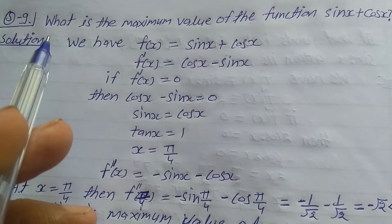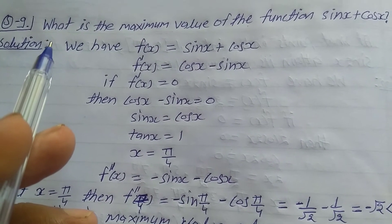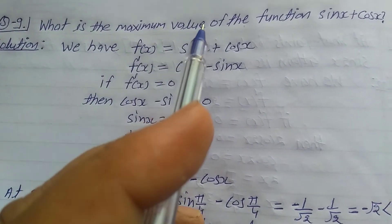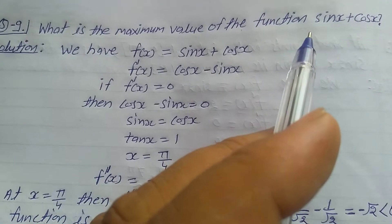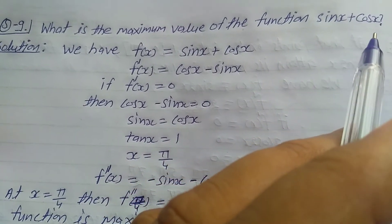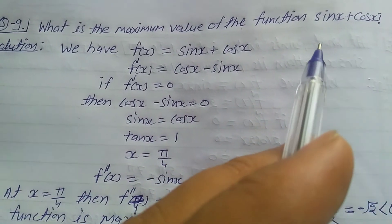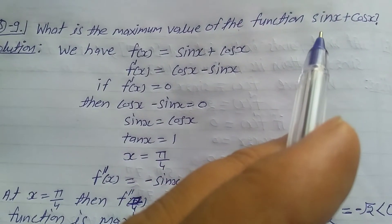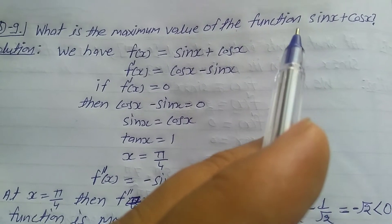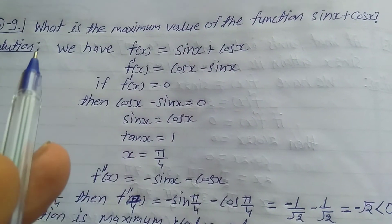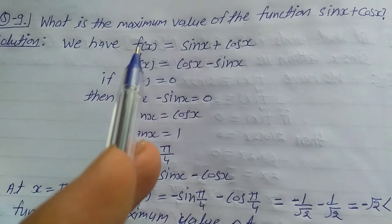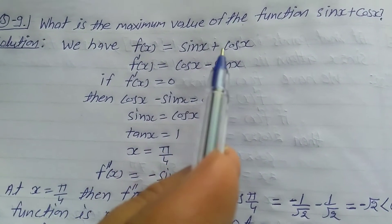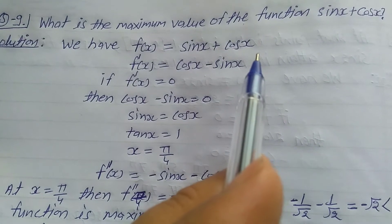Explain question number 9, Exercise 6.5, Class 12: what is the maximum value of the function sin x plus cos x? We need to find the maximum value of the given function. So the solution starts: we have f(x) is equal to sin x plus cos x.